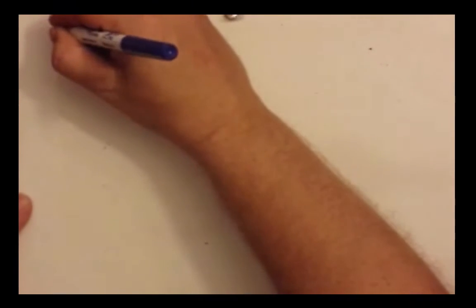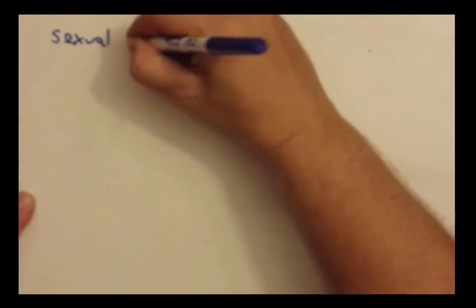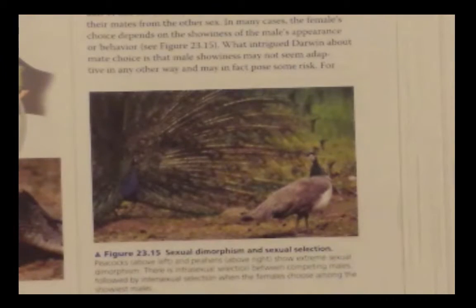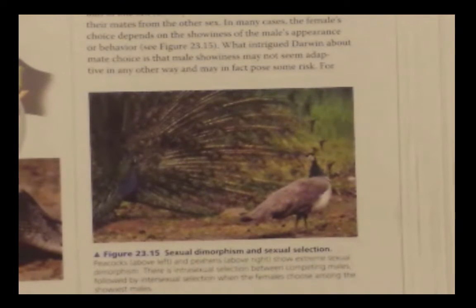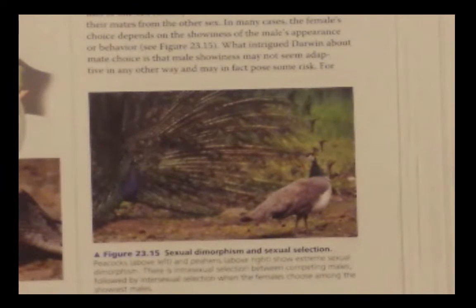Your book talks about some interesting ways that individuals are selected for in their path to increased reproductive success. One of these terms is called sexual dimorphism. Sexual dimorphism refers to differences in secondary sexual characteristics between males and females of the same species — not the primary sexual features, but the secondary ones like color or maybe a mating dance.